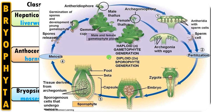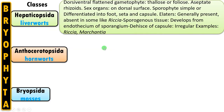Now let us summarize the characteristics of Hepaticopsida: dorsiventral flattened gametophyte, thallus or foliose, aseptate rhizoids without septum or crosswall. Sex organs are formed on the dorsal surface — antheridiophore and archegoniophore. Sporophyte is simple, differentiated into foot, seta, and capsule. Elaters are present — special cells that help in dispersal of spores, sometimes absent in some genera like Riccia. Sporogenous tissue develops from the endothecium of the sporangium. Dehiscence of the capsule is irregular. Examples include Riccia and Marchantia.